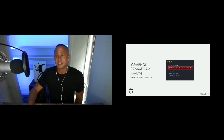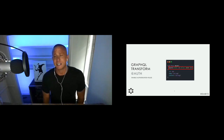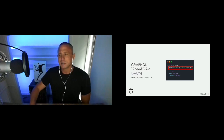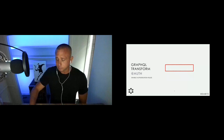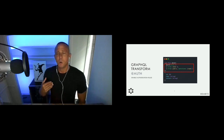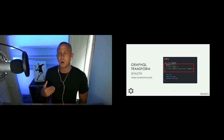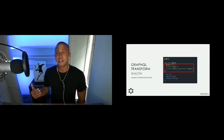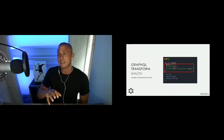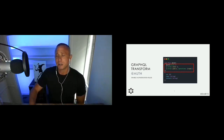The @auth directive lets you define an array of authorization rules. For a basic use case you might only want the owner to update, delete, or read — you just pass in 'allow: owner'. For something like Instagram or Twitter, you want the owner to have full access but the public to only be able to read. You just pass an array of rules: 'allow: owner' and 'allow: public' with operations set to read only.